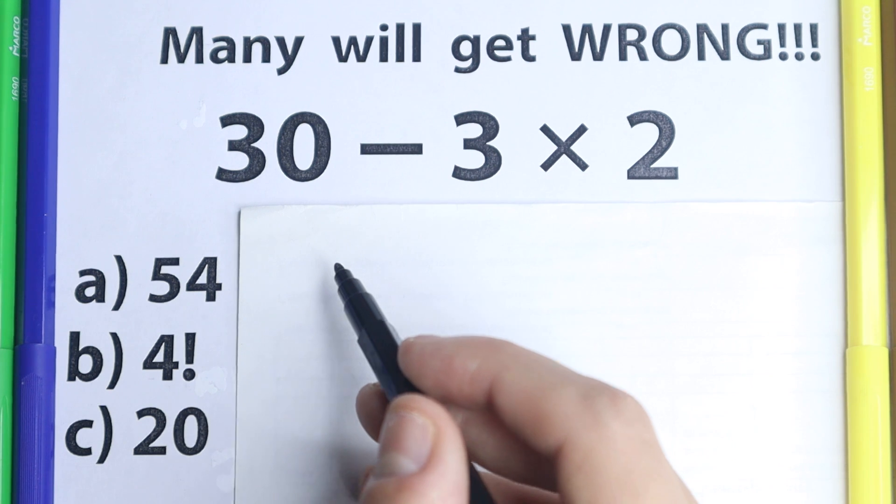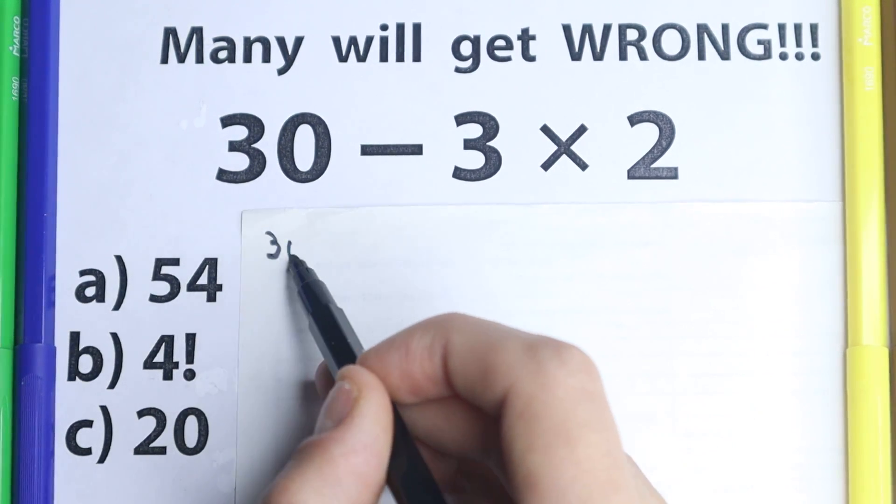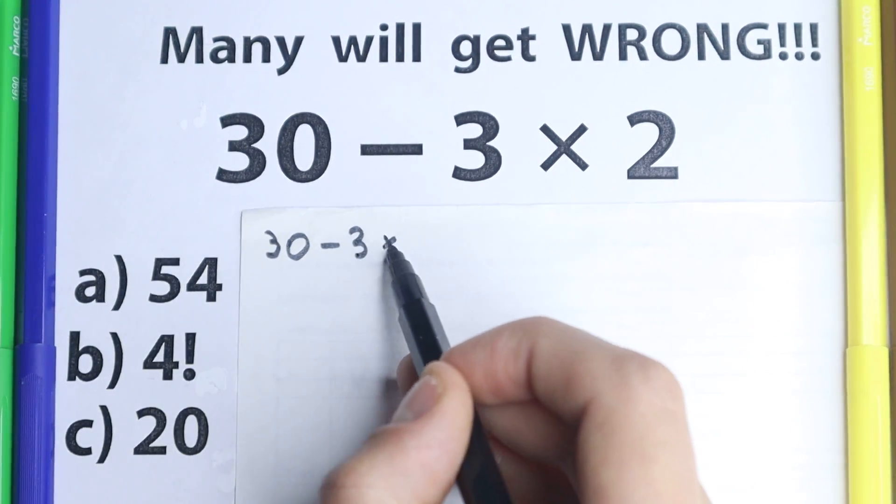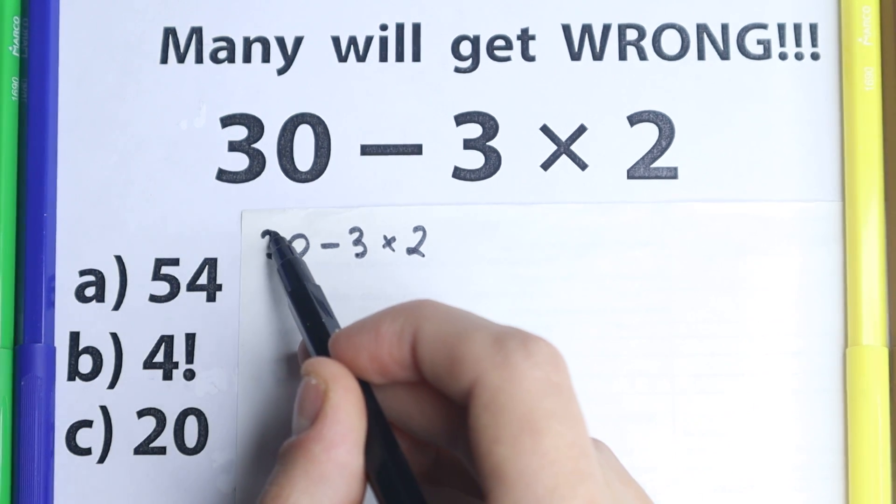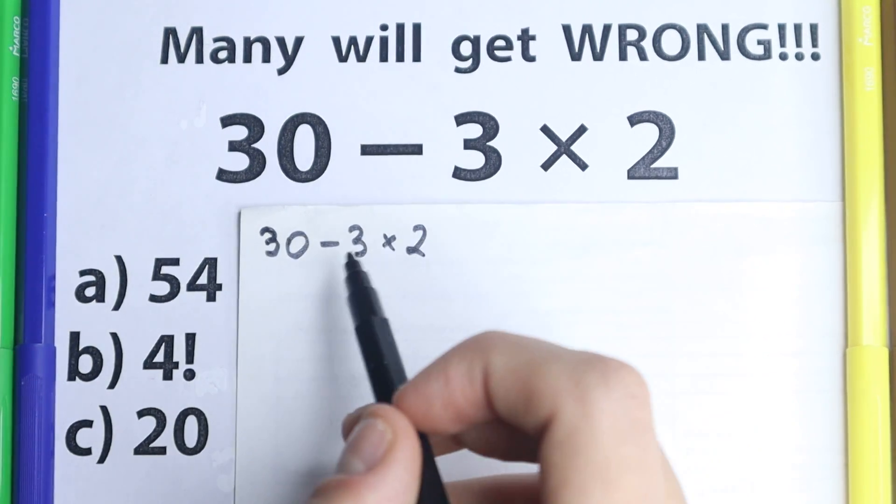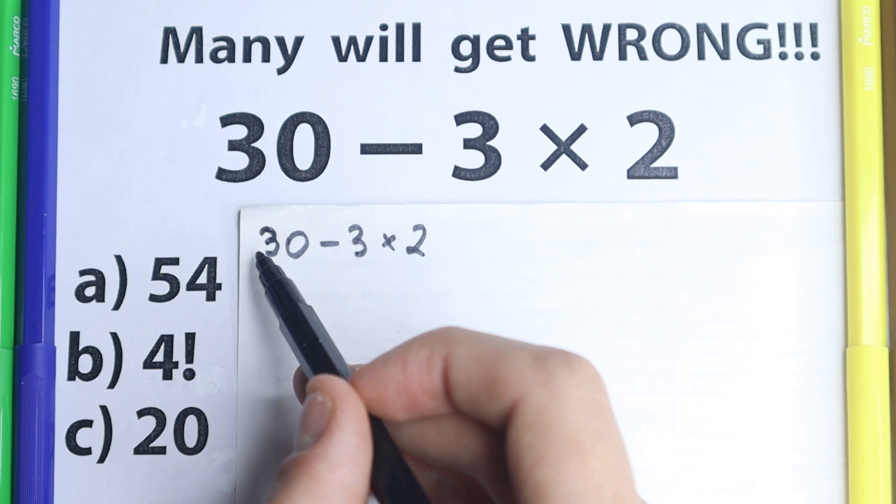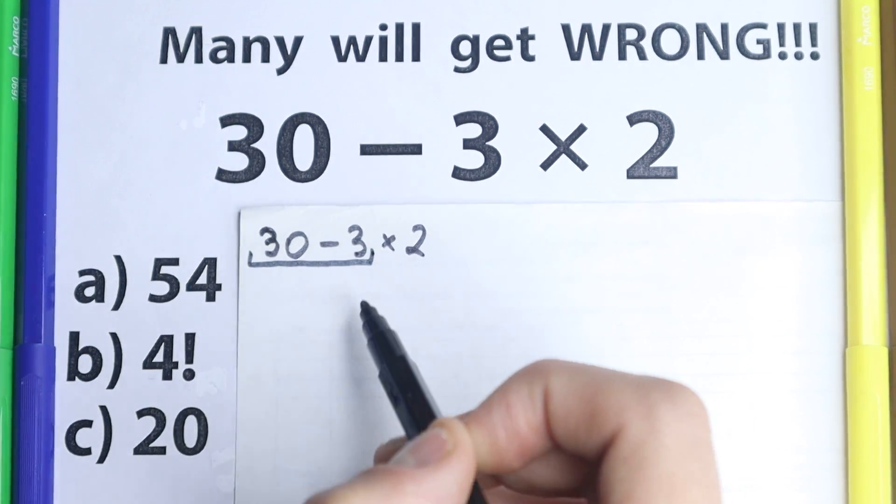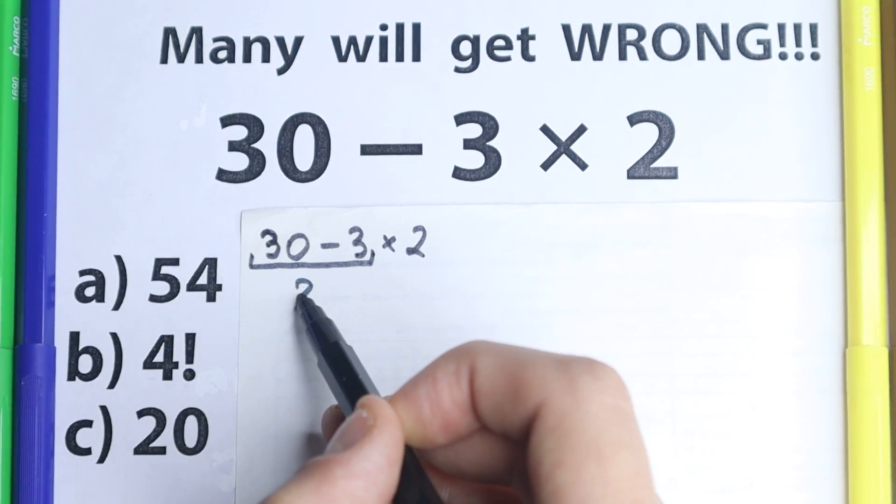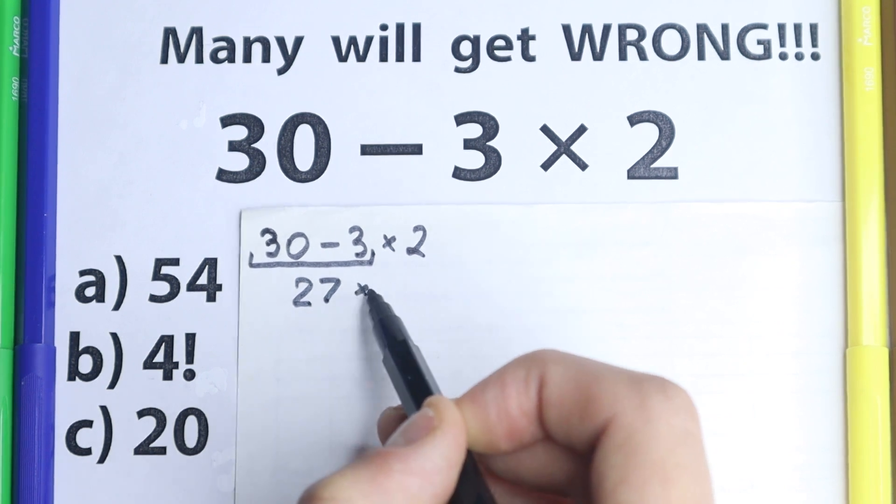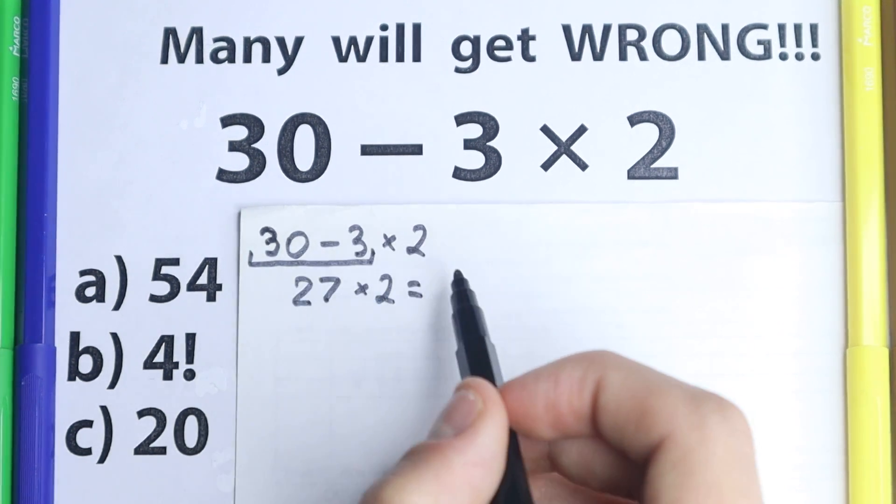First of all I want to write this solution. So we have 30 minus 3 times 2. And I don't want to tell that this is correct or incorrect, I just wanted to show this solution. So 30 minus 3, a lot of students start with this one. 30 minus 3 equals 27. 27 times 2 equals 54.